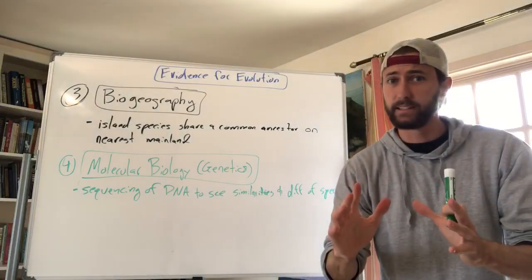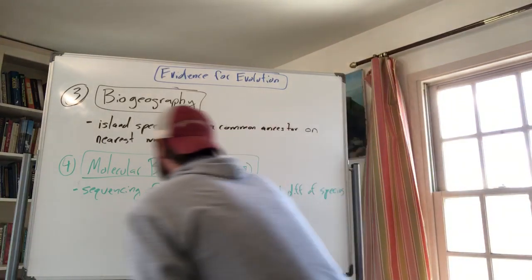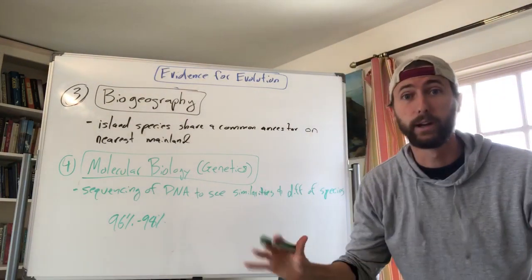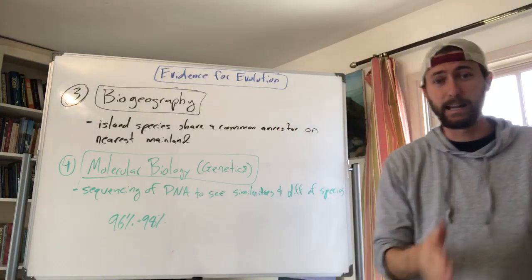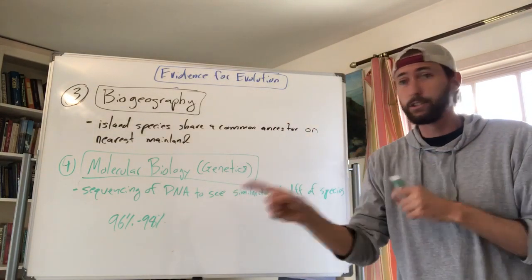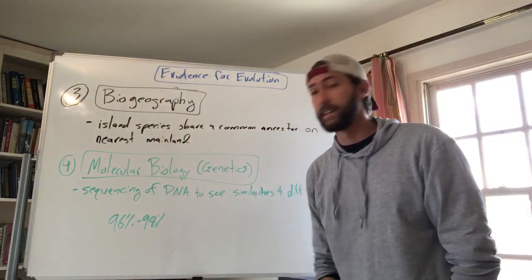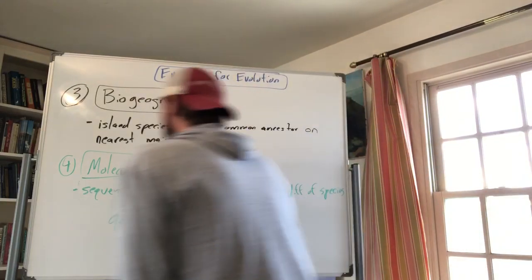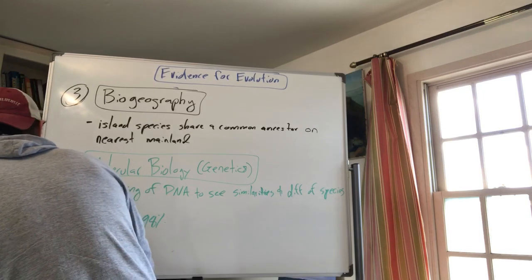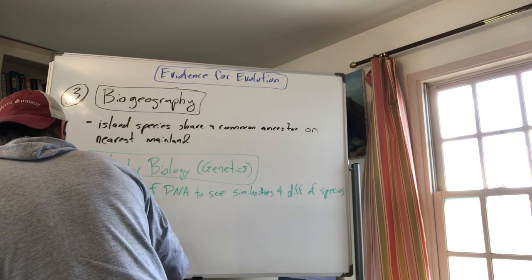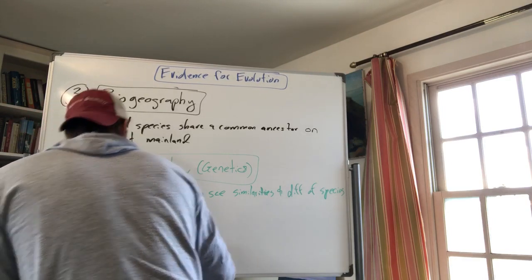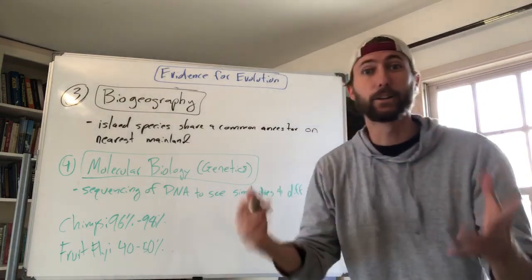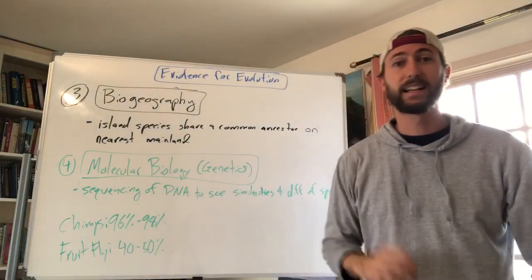The results are mind-blowing. Chimpanzees and human beings share 98% identical DNA — 98% of the A, T, C, G sequence lines up exactly the same between chimps and humans. There's only a 2 to 4 percent difference, yet there are many observable differences between us. Comparing to something more distant: fruit flies share about 40 to 50 percent of the exact same DNA as human beings. You are 40 to 50 percent identical to a fruit fly.